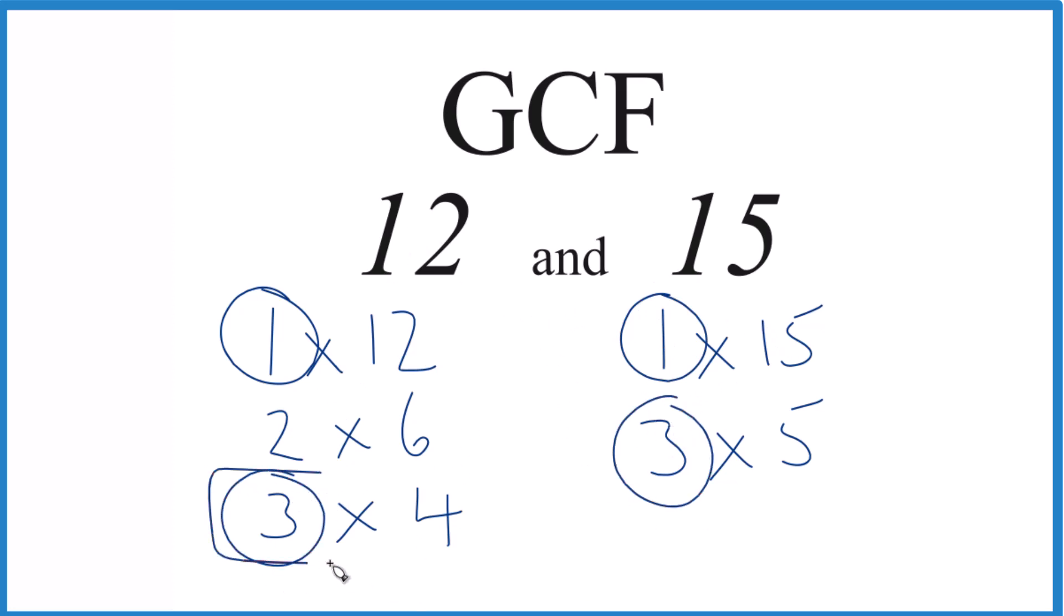So 3, that's going to be the greatest common factor. It goes into 12, and it goes into 15 evenly. So in answer to our question, the GCF for 12 and 15, that's 3.